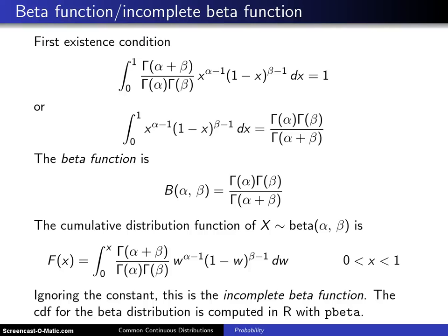This slide defines two new functions that are associated with the beta distribution. The first such function is known as the beta function, and the second such function is known as the incomplete beta function.